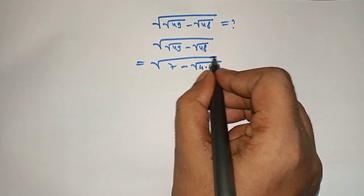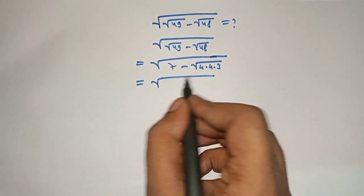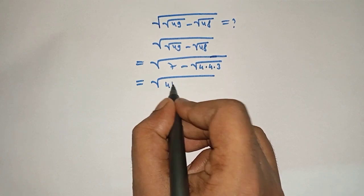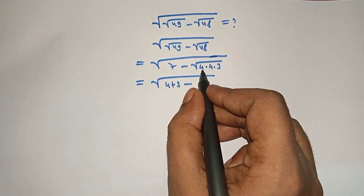Now square root of 7 can be written as 4 plus 3 minus. Here...